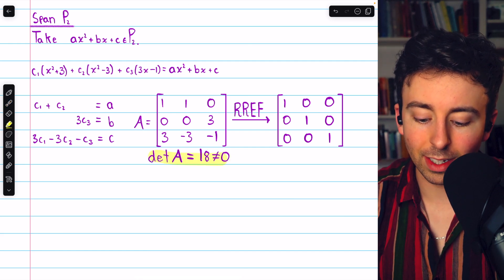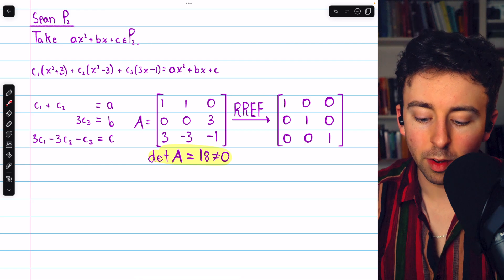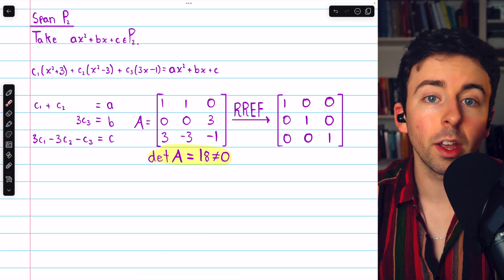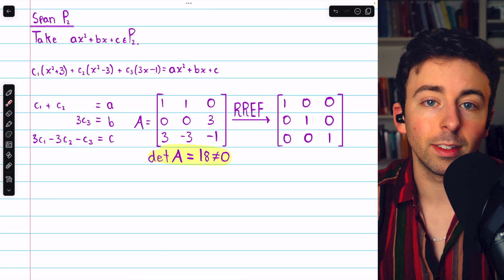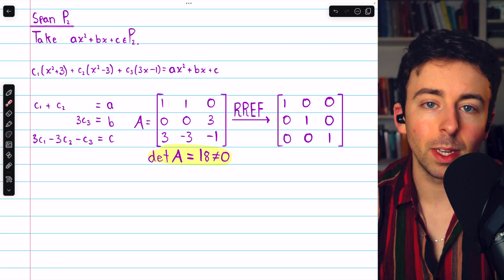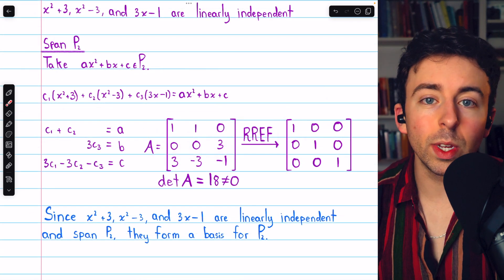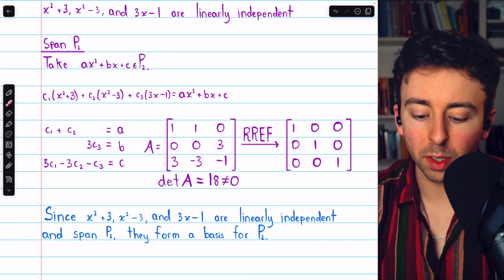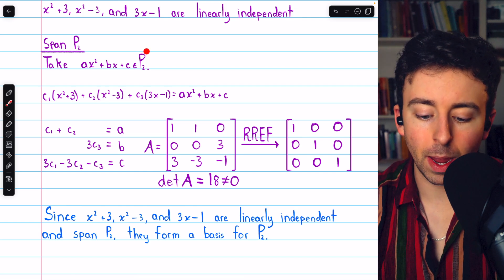again, you could just calculate the determinant of the coefficient matrix, find that it's not zero, and that would also tell us that this system is consistent no matter what A, B, and C are. Either way, we conclude that the three polynomials in question do indeed span this space.